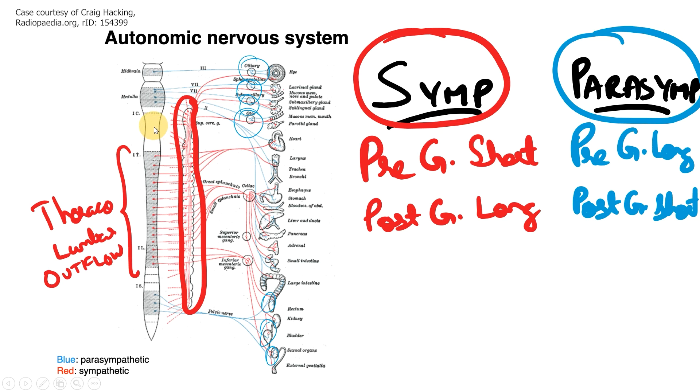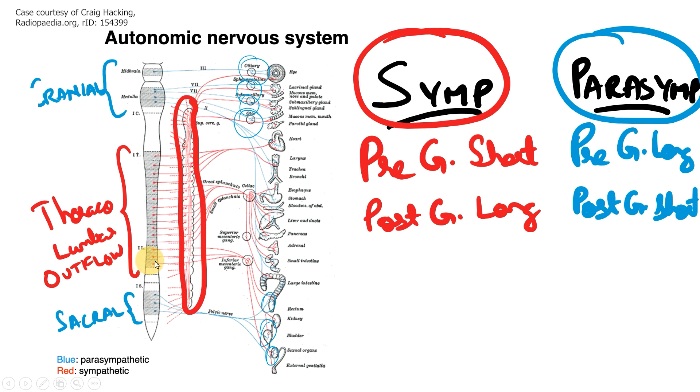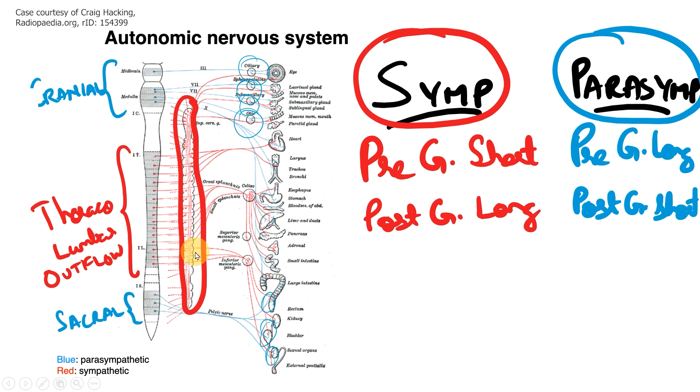Now if you compare that with how this blue neurons are, the blue neurons are located in some cranial nerves, some specific cranial nerves. These cranial nerves are 3, 7, 9 and 10. So those cranial nerves and these lower sacral nerves encompass what is called as the craniosacral outflow. So the parasympathetic system is a craniosacral outflow and the sympathetic system is a thoracolumbar outflow. This is the anatomical differences between the sympathetic and the parasympathetic system.